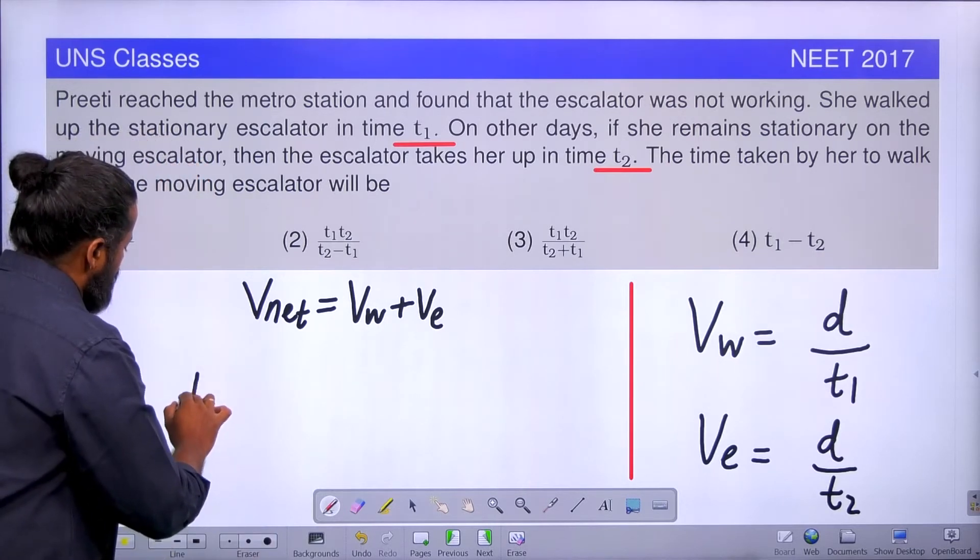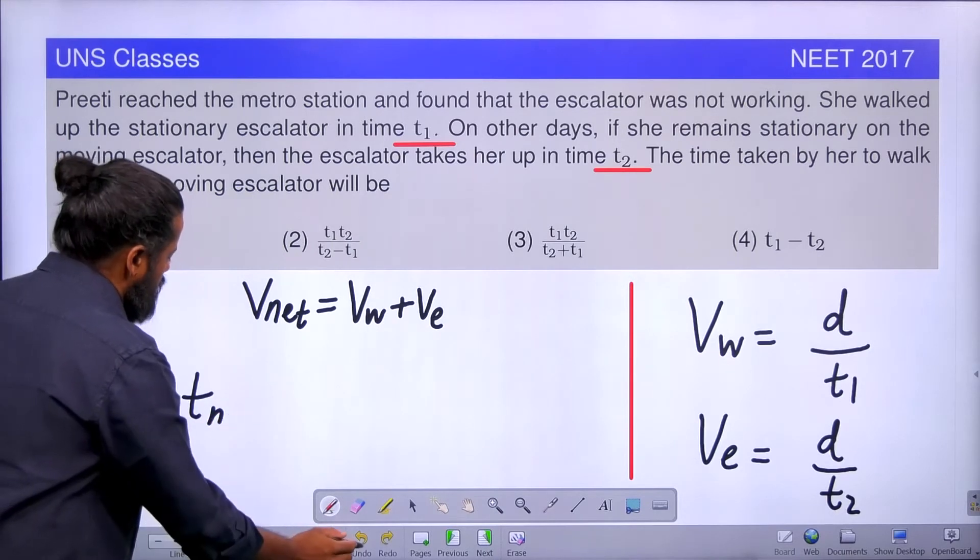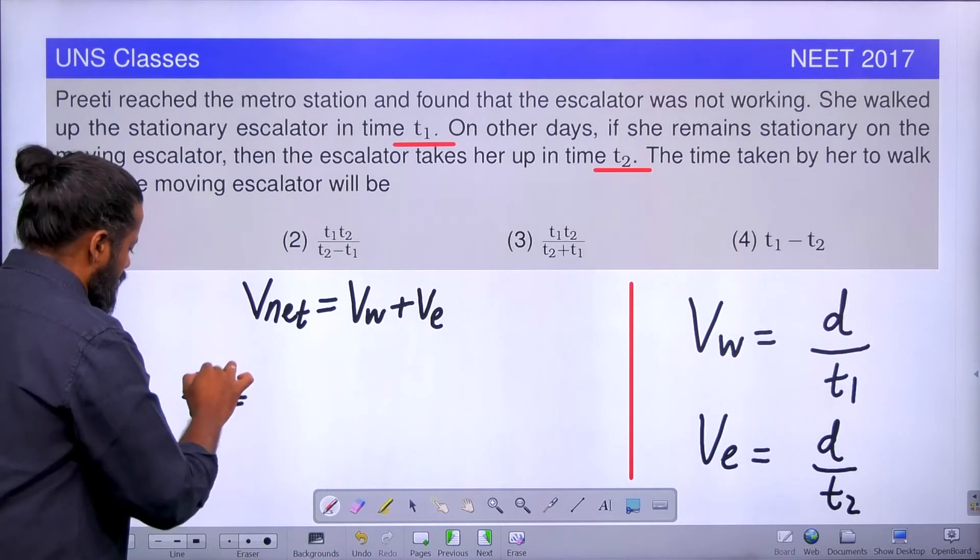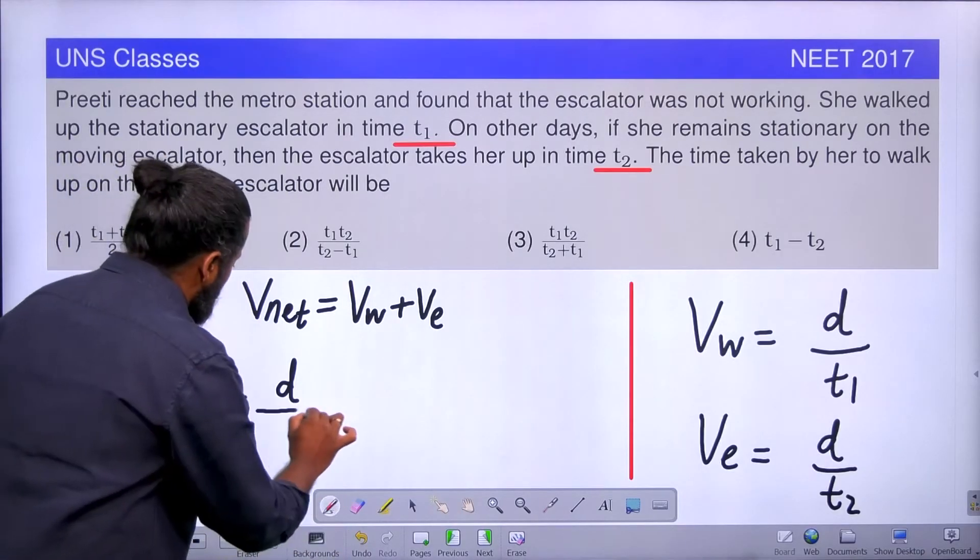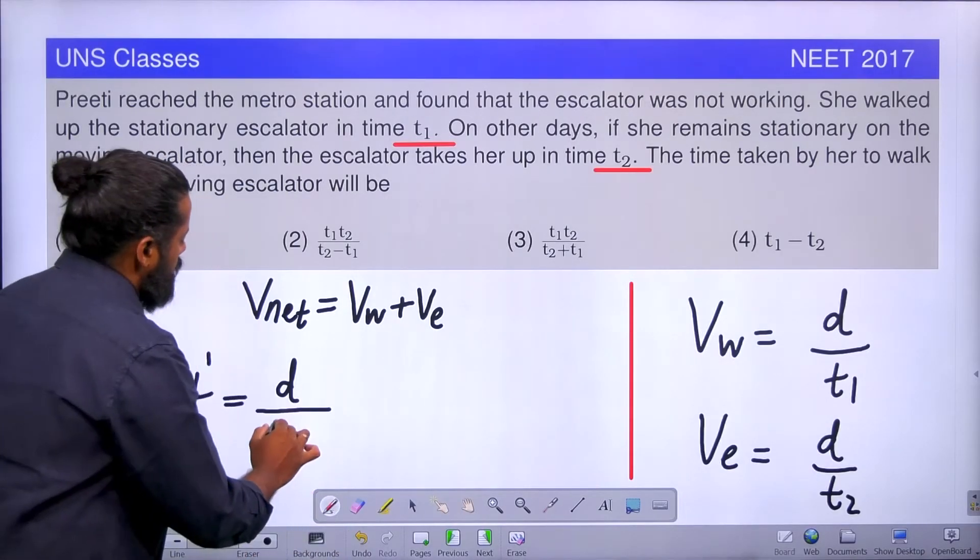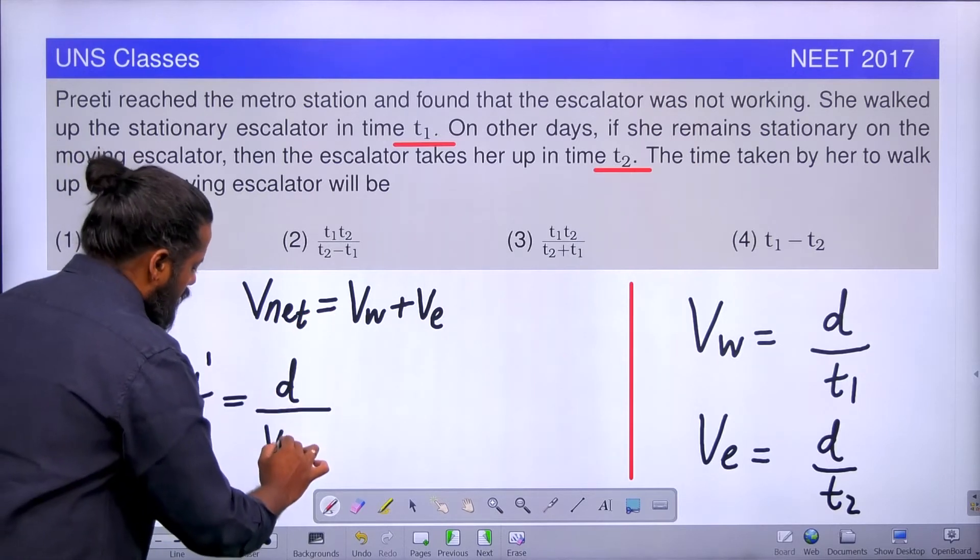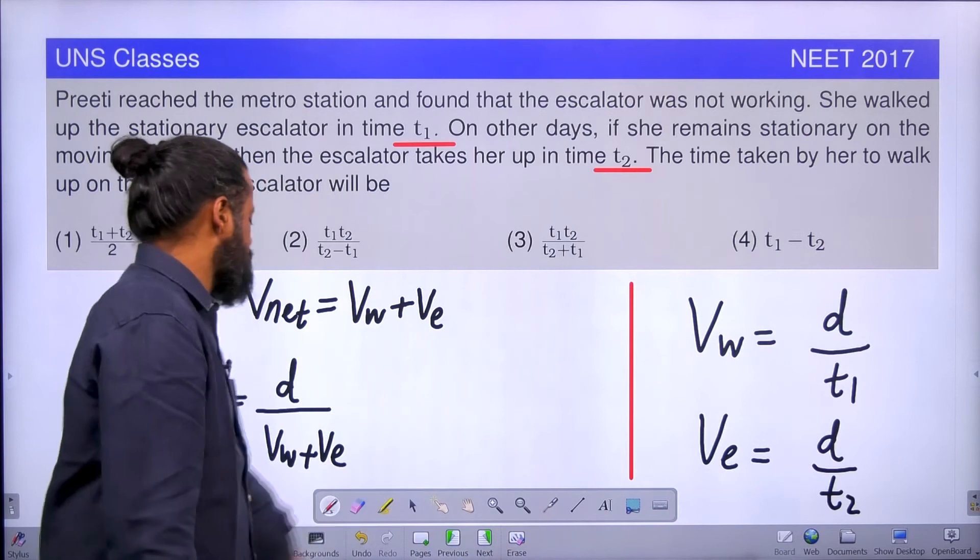The time is going to be equal to T_net, or let us call it as T dash, is equal to the total distance, which is again the same. The total distance divided by how much is the velocity? We have to put the net velocity V_W plus V_escalator. So we have to substitute these values there. That's all. You will get the answer.